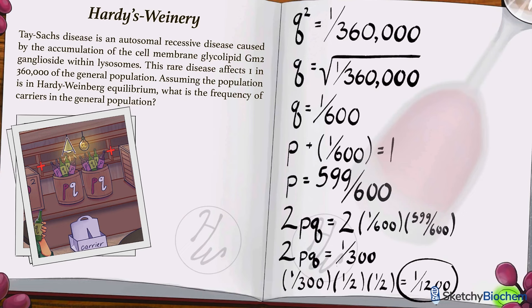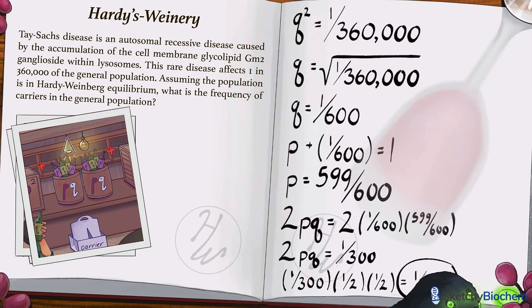Another way to answer this question is by drawing a Punnett square. The probability of two carriers producing a Tay-Sachs baby is 1 in 4. The probability of a known carrier mating with another carrier is 1 in 300. If we multiply 1 over 4 times 1 over 300, it equals 1 in 1200. Now you should be able to absolutely plaster any Hardy-Weinberg problem you get on the step.